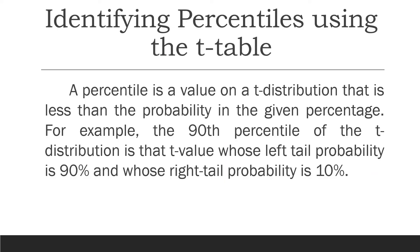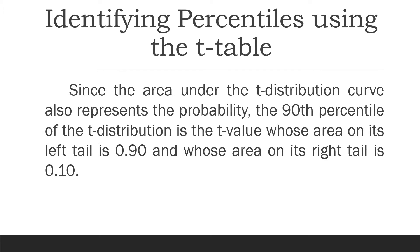Now, identifying percentiles using the t-table: a percentile is the value on the t-distribution that is less than the probability in the given percentage. For example, the 90th percentile of the t-distribution is the t-value whose left-tail area is 0.90 and whose right-tail probability is 10%, since the area under the t-distribution curve also represents probability.